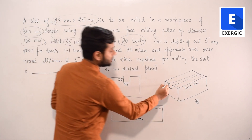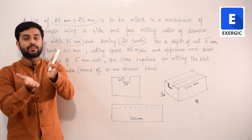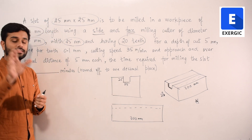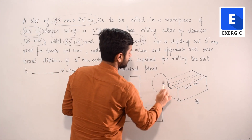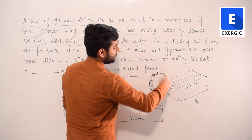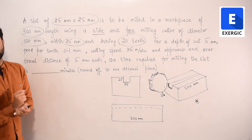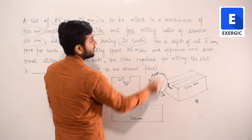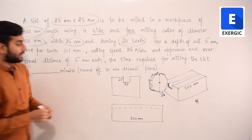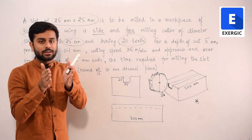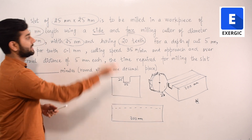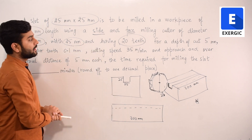Since you need to mill both the side and the face of the slot at the same time, a side-and-face milling cutter is used — the same cutter mills both. The cutter has a diameter of 100 mm (radius 50 mm). To create a width of 25 mm in the slot, the cutter should also have a width of 25 mm, which it does. It also has 20 teeth.